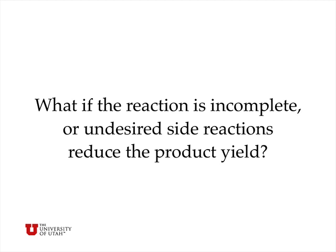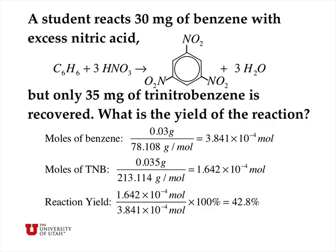If a reaction is incomplete, or undesired side reactions reduce the product yield, how do we calculate the reaction yield? We use a similar technique, but now we need information about both the reactants and the products. If a student reacts 30 milligrams of benzene with excess nitric acid but only 35 milligrams of the desired product, trinitrobenzene, is recovered, then what's the yield of the reaction?